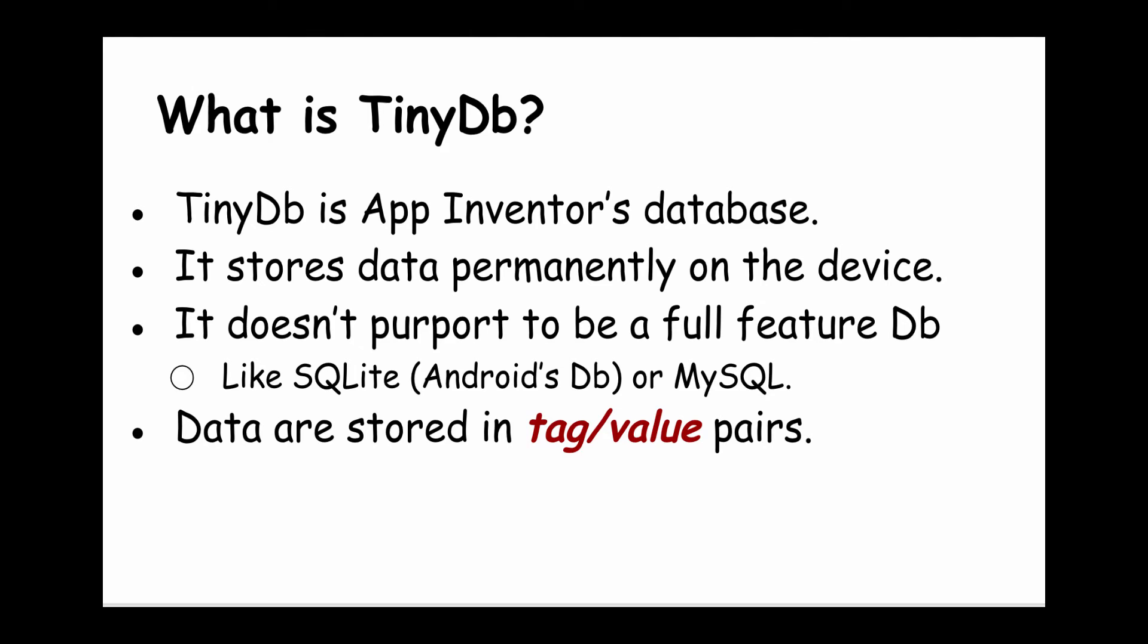In App Inventor, data are stored in tag-value pairs. The tag has to be a string. This is very important. The value associated with the tag can be a number, a string, or a list—those three types of data.